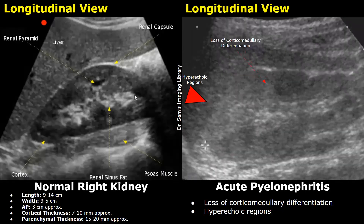In this image we can see hyperechoic areas in the upper pole of the right kidney. This was also a case of acute pyelonephritis, and there is loss of corticomedullary differentiation as well.